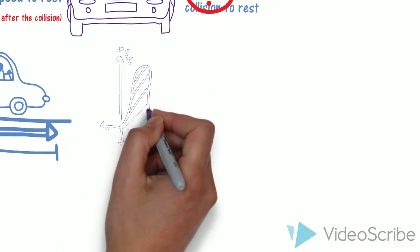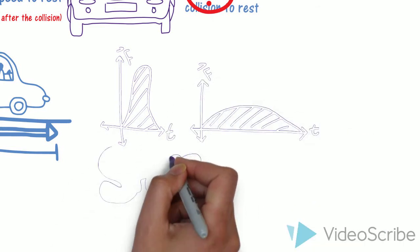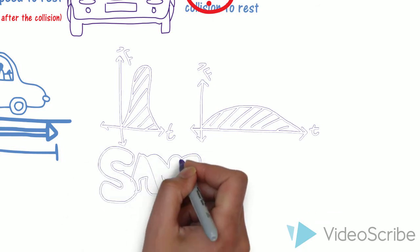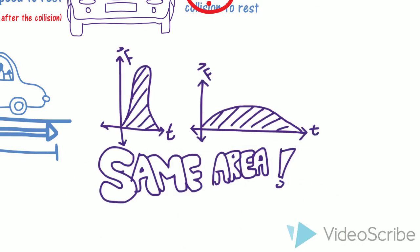We can graph this with a force time graph. If your stopping time is short, your force is much higher than if you have a longer stopping time. The area under both graphs are the same and are equal to the change in momentum.